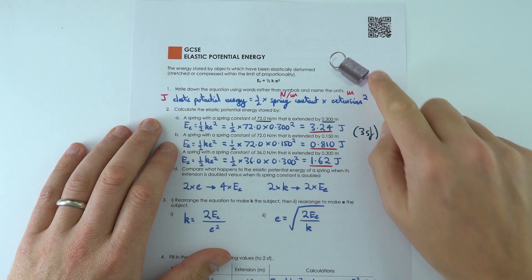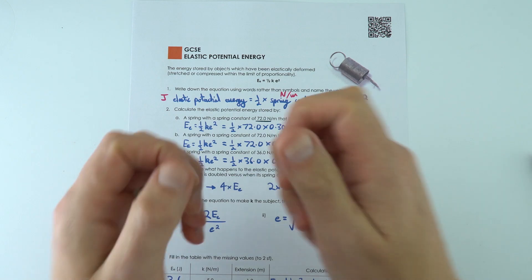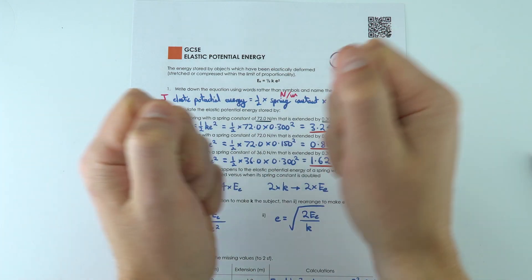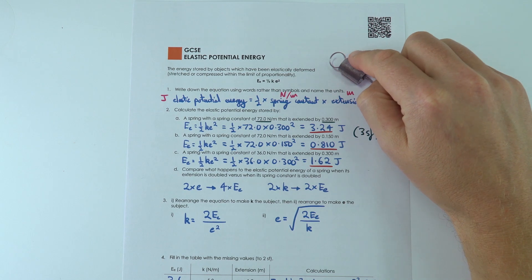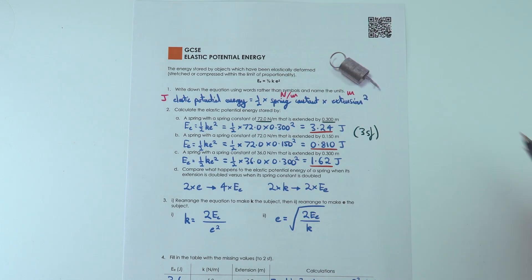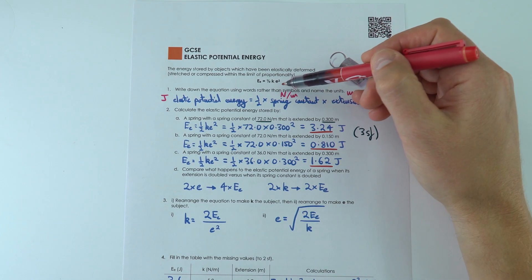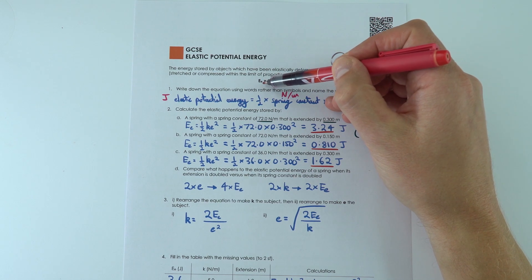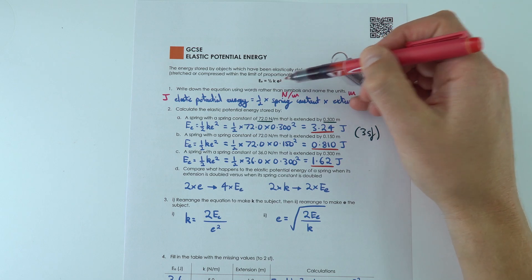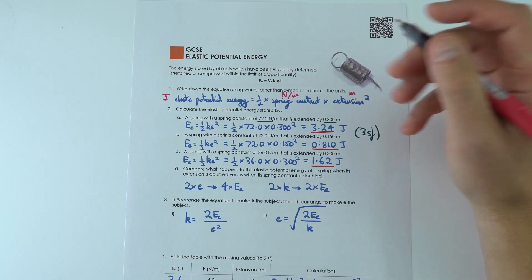Elastic potential energy often involves looking at springs which might be extended or maybe even compressed. I've got another worksheet looking at springs and the spring constant you can have a go at. So the first one, I've just written this out so there's lots of E's. We've got big E with a little e to represent our elastic potential energy. We've got e to be the extension, but sometimes...